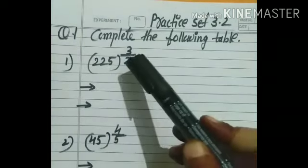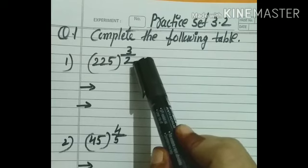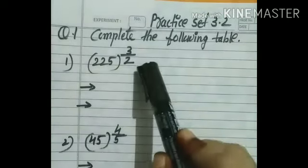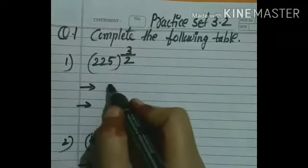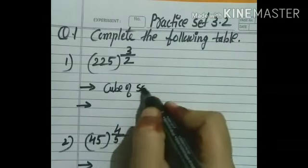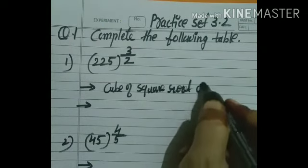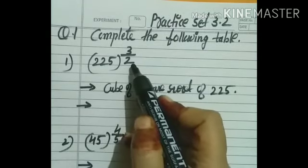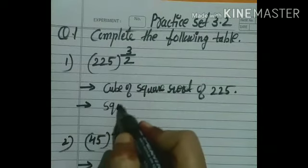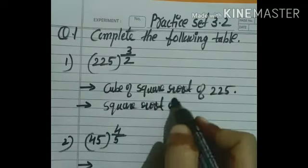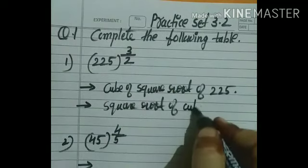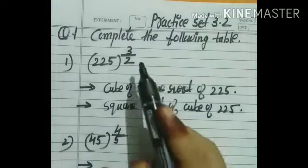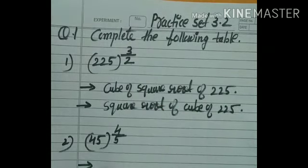The second meaning: we start from the denominator, which is 2. This 2 is the root. So we write the square root of the cube of 225. So the two meanings are: cube of square root of 225, and square root of cube of 225. This is how we write whenever the index is in rational form. The first one is now completed.